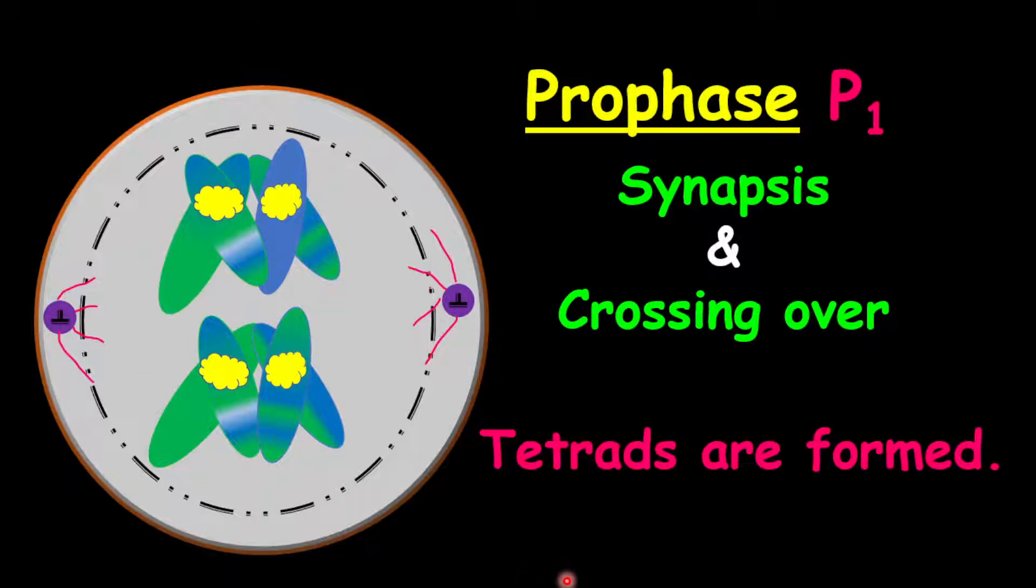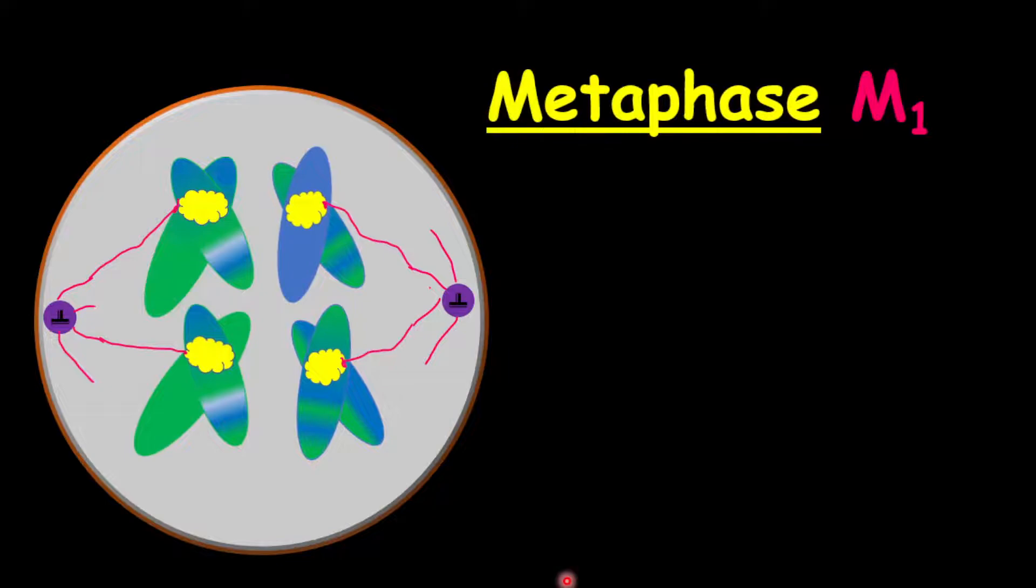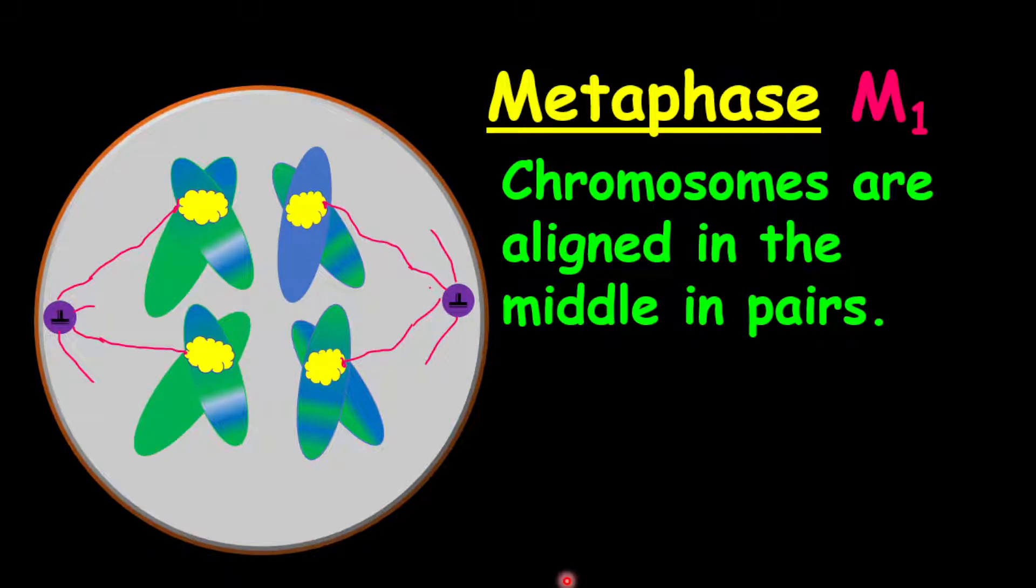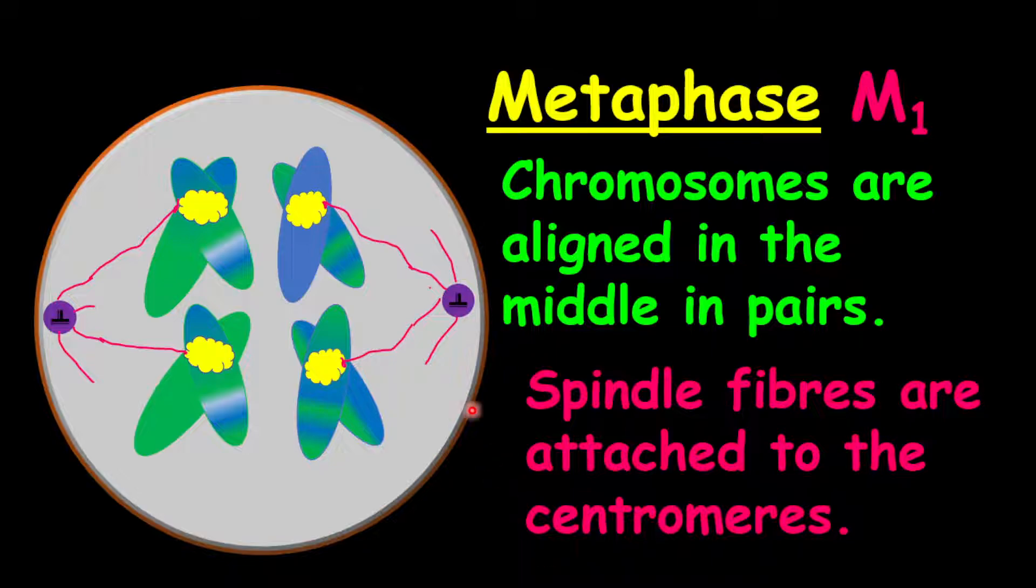So, after the prophase one, we'll undergo now our metaphase one. And what is different in metaphase one than the regular mitosis metaphase is that the chromosomes are aligned in the middle of the cell, but this time in pairs. So, notice you see two lines of chromosomes going down the center of the cell. At this point as well, we can talk about our spindle fiber that connects to the centromere on the chromosomes, and they will extend right to the central inside of the centrosome.